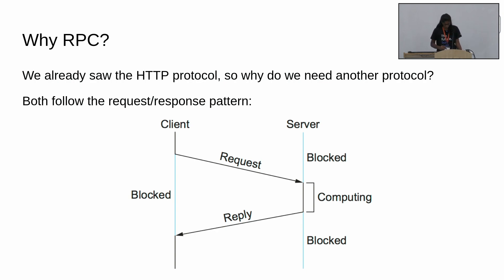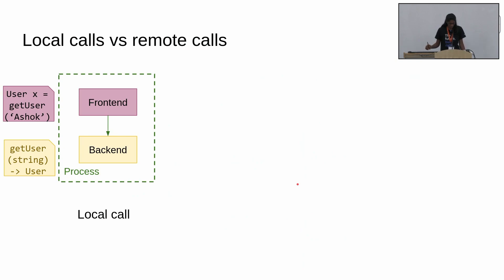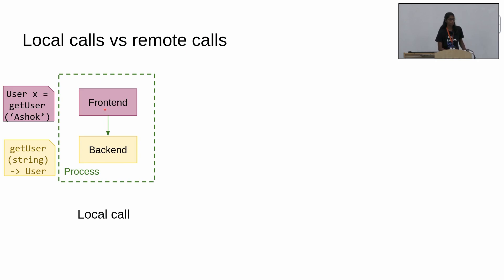So why do we need another protocol? A request-response protocol is where the client sends a request, the server does some computing, and then it responds back to the client. We've all used local calls — that's just a normal function call in your programs. If you have a process with a frontend.py and backend.py, and there's a function in backend called getUser which takes a string and returns a user struct, the frontend can call that function by just referring to it as getUser. This is what is known as a local call.